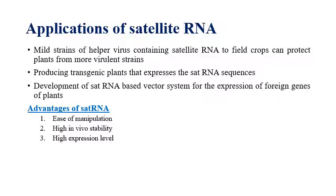Regarding applications of satellite RNA: mild strains of helper virus containing satellite RNA can protect plants in fields from severe strains. Using genetic engineering techniques, satellite RNA can be inserted into plants so that field crops are protected from severe strains of plant viruses.